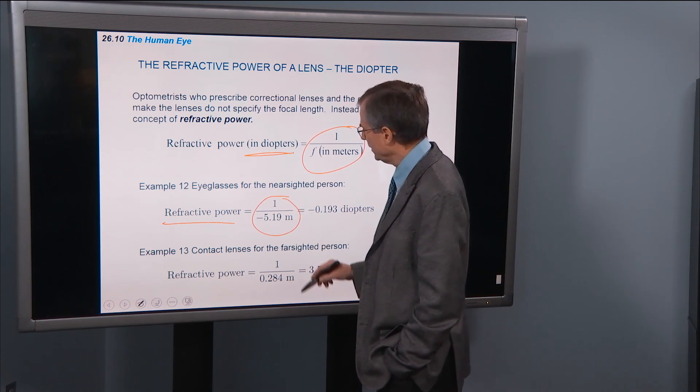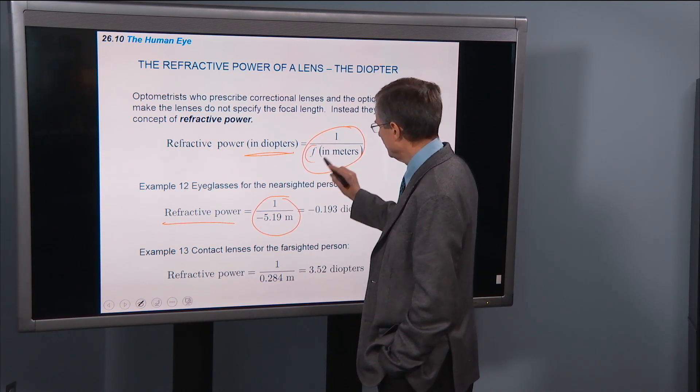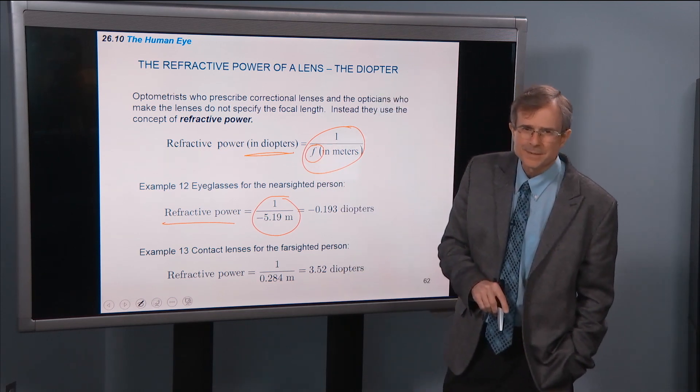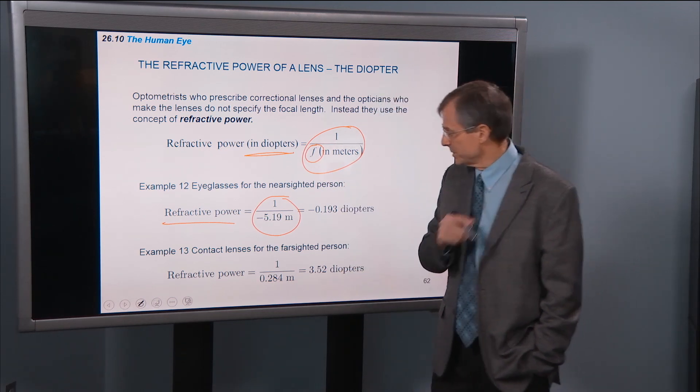has a focal length that is negative, and you say diverging lens. So you need a diverging lens for nearsighted folks.